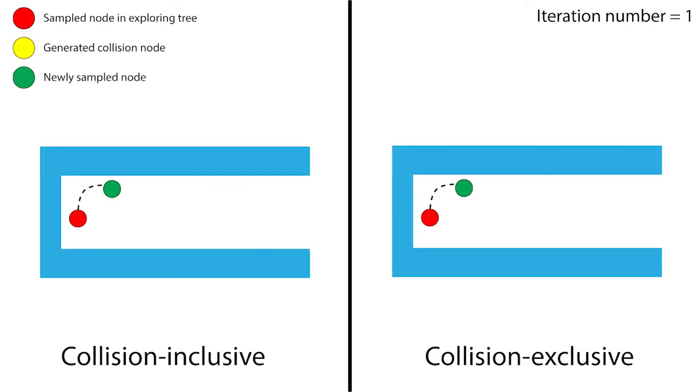Allowing collisions helps improve the performance of the sampling-based planner in narrow spaces like tunnels. Since sampled states are not discarded due to collisions, the collision-inclusive planner can add samples to the exploring tree more rapidly.